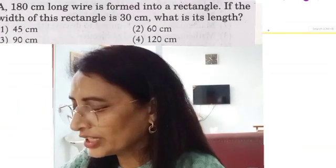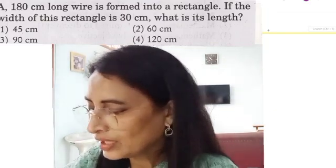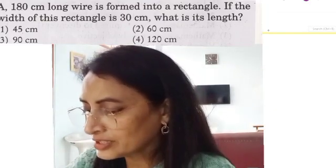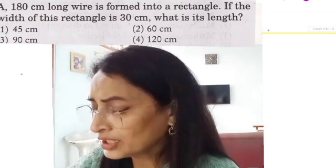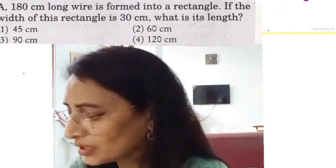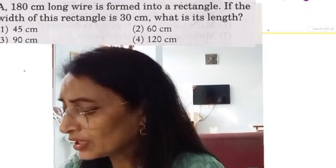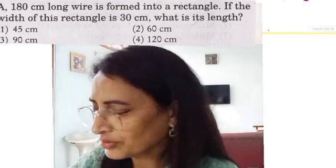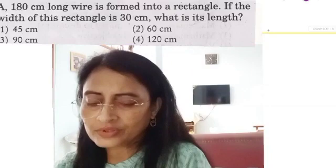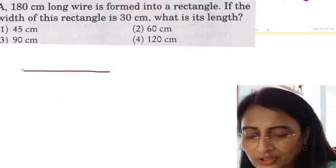What is our next question? 180 cm long wire is formed into a rectangle. If the width of this rectangle is 30 cm, what is its length? Width means breadth 30 cm, length we have to find out. And 180 cm means perimeter. Options are 45, 60, 90, 120. So as usual, we draw.